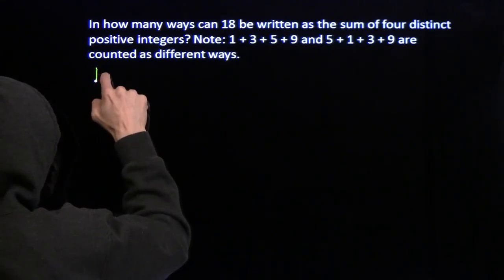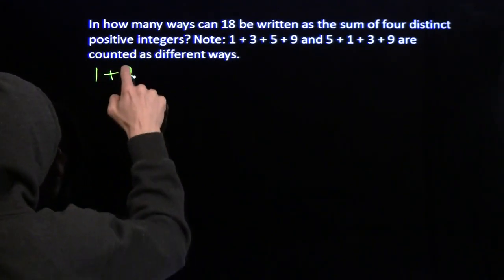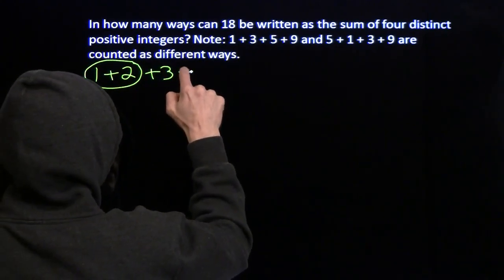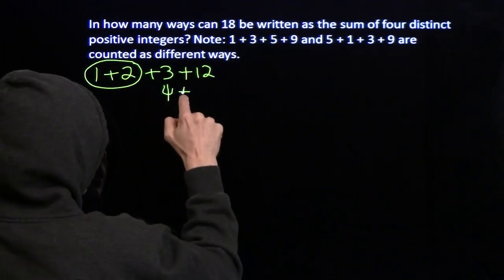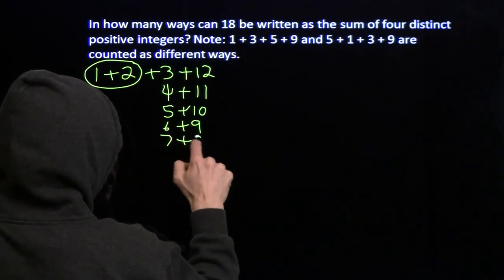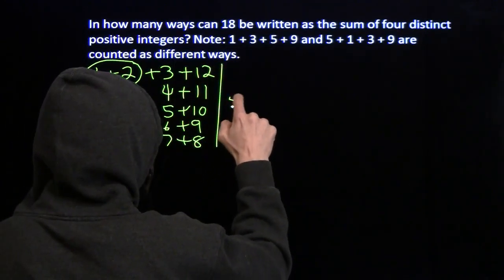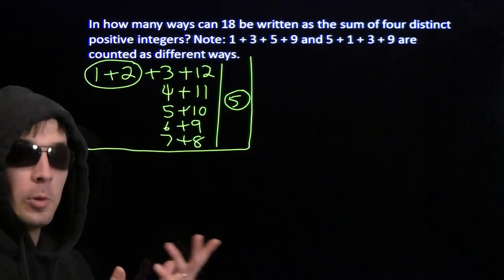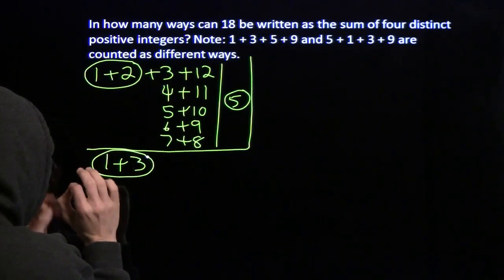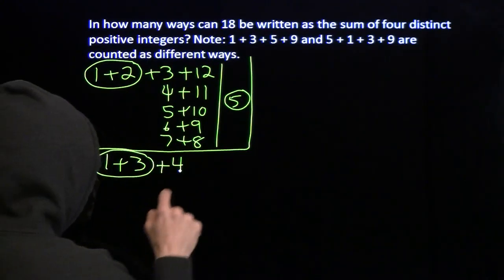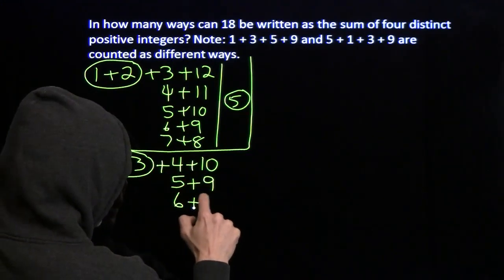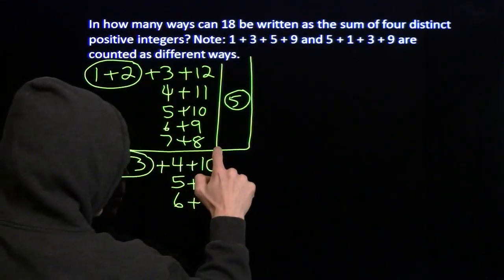We're going to be nice and organized finding the different groups of four different numbers that add up to 18. We'll start from the bottom — start from one plus two. One plus two plus three is six, plus 12 gets us to 18. Then we can pound through these cases: five plus ten, six plus nine, seven plus eight. There are five groups that start with one plus two. Nice, clear, organized casework — the key to casework problems is being organized so you count everything once and only once.